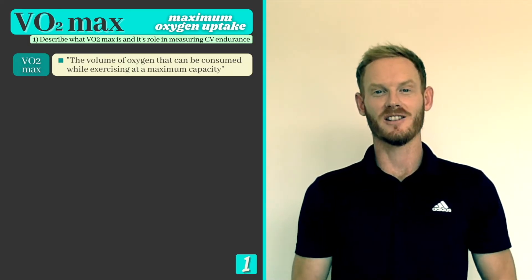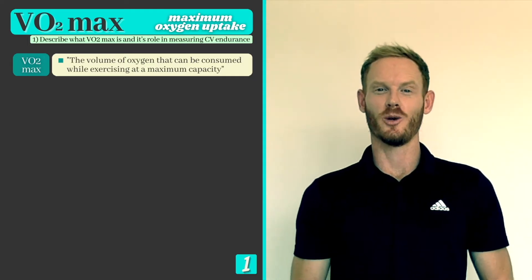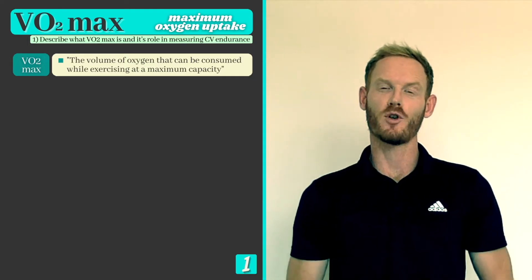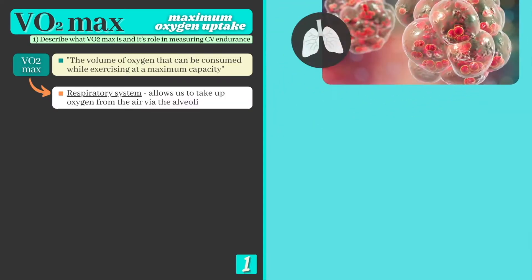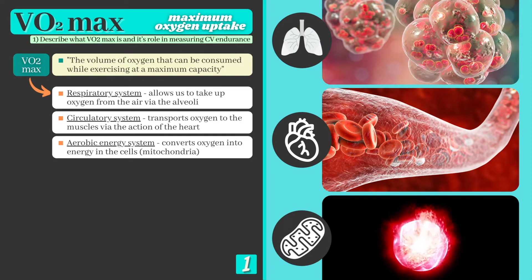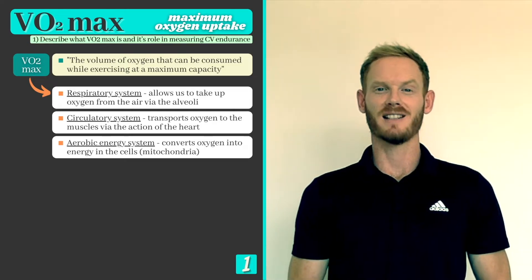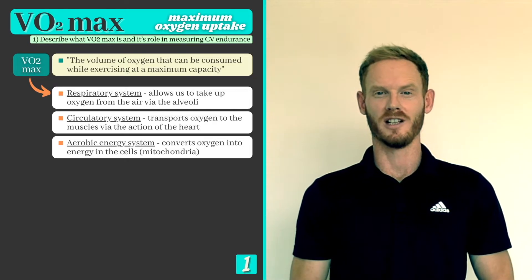Which physiological factors determine our VO2 max level? Our ability to consume oxygen is dependent on a number of systems within the body, including the respiratory system, which is required to take up oxygen from the air via the alveoli; the circulatory system, which transports it to the working muscles by the action of the heart; and the aerobic system, which converts it into usable energy or ATP. If the efficiency of any one of these systems became affected, our VO2 max level would decline.